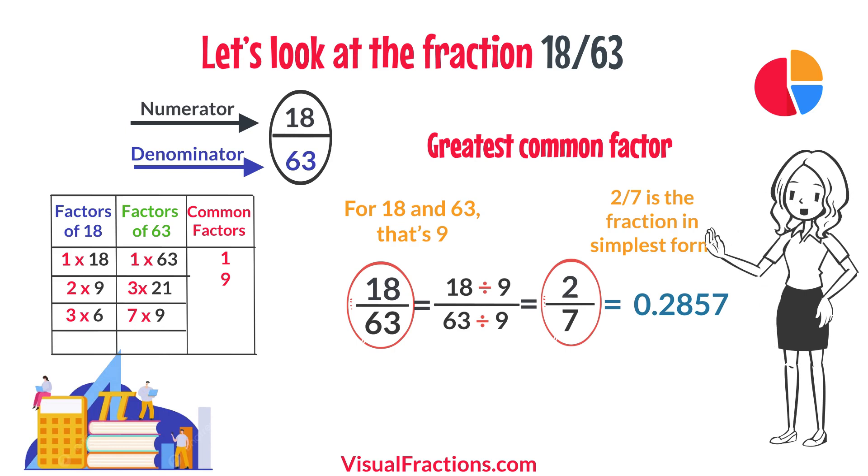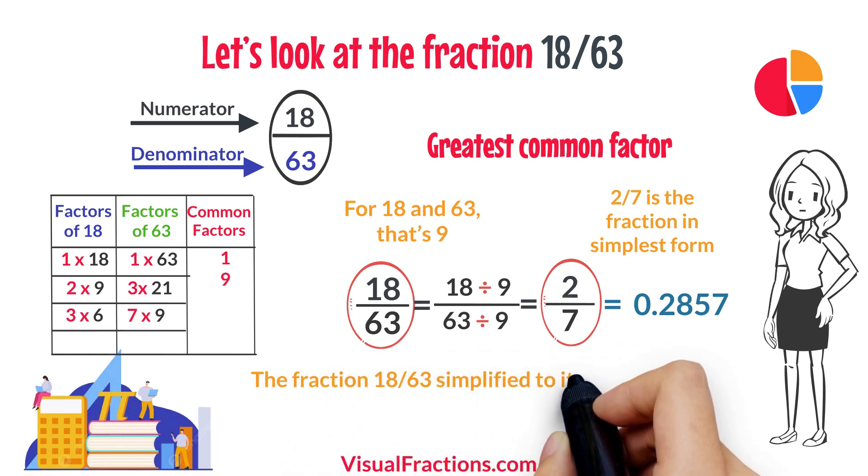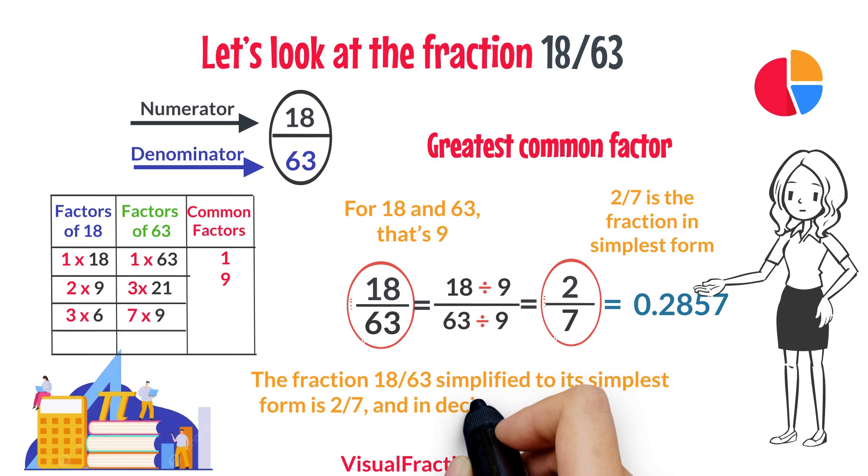So, there you have it. The fraction 18/63 simplified to its simplest form is 2/7, and in decimal form, it's about 0.2857.